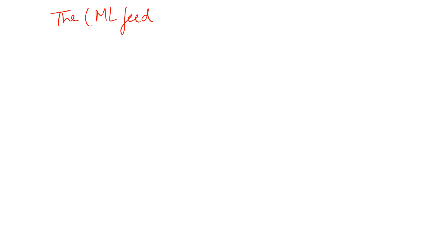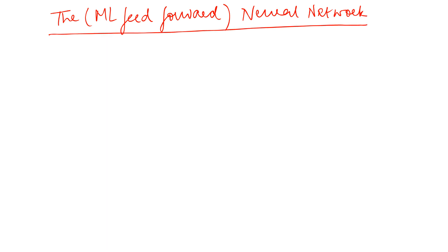Let us begin with something known as the ML or the multi-layer feedforward neural network. This is built on the MLP representation that we just saw in the previous video. We're going to update that to a neural network with the addition of the sigmoid function instead of the step sign function that we were using earlier. So that's the only change that's happening here.